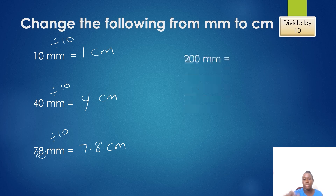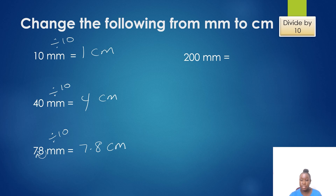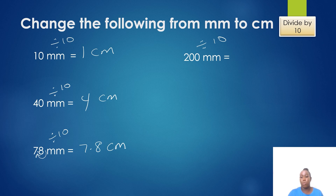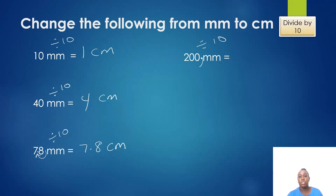Now let's do our next example. I have 200 millimeters and I would like to change it to centimeters. All I have to do is divide by 10, shifting the decimal point to the left. For a whole number like 200, the decimal point is understood to be after the last digit. So all I have to do is shift it once to the left, and my new number would be 20 centimeters.